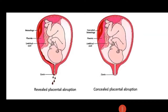Looking at the image: in revealed abruptio placenta, blood collects and hemorrhage is visible externally. In concealed abruptio placenta, hemorrhage is gathered internally.